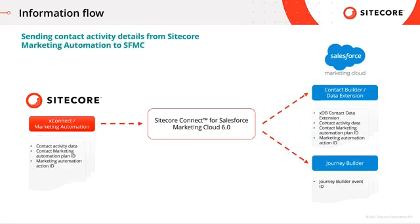When sending contact activity details from Sitecore marketing automation to Salesforce Marketing Cloud, the connector takes XConnect contact activity data and marketing automation plan ID plus the action ID from XDB and sends it over to the contact builder data extension — the previously mentioned XDB contact data extension — where it also adds the contact activity data, marketing automation plan ID, and marketing automation action ID. This allows Salesforce Marketing Cloud to know which marketing automation plan ID and action ID our contacts in Sitecore have been going through.